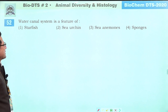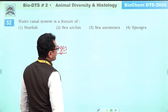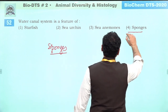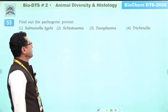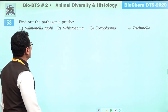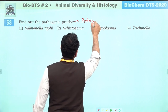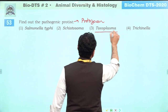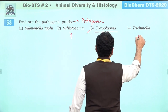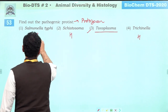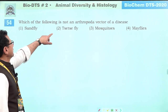Water canal system is a feature of sponges. Among the options, we must find which one is a sponge. Answer is four. Find out the pathogenic protist: Toxoplasma is a protozoan. The others — Ascaris (helminth), Trichinella (helminth), and Salmonella (bacterium) — are not protists. So answer is four: Toxoplasma.